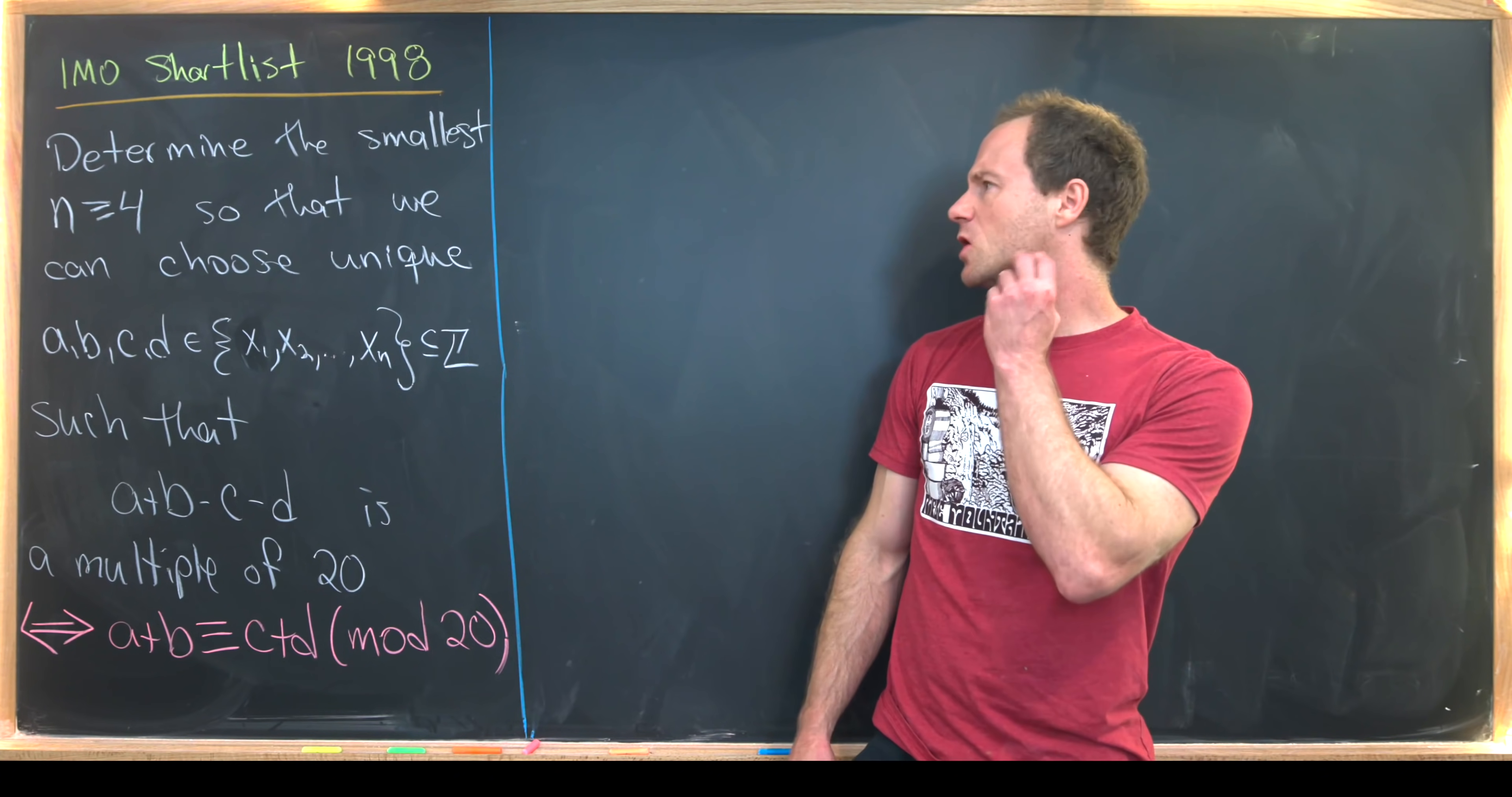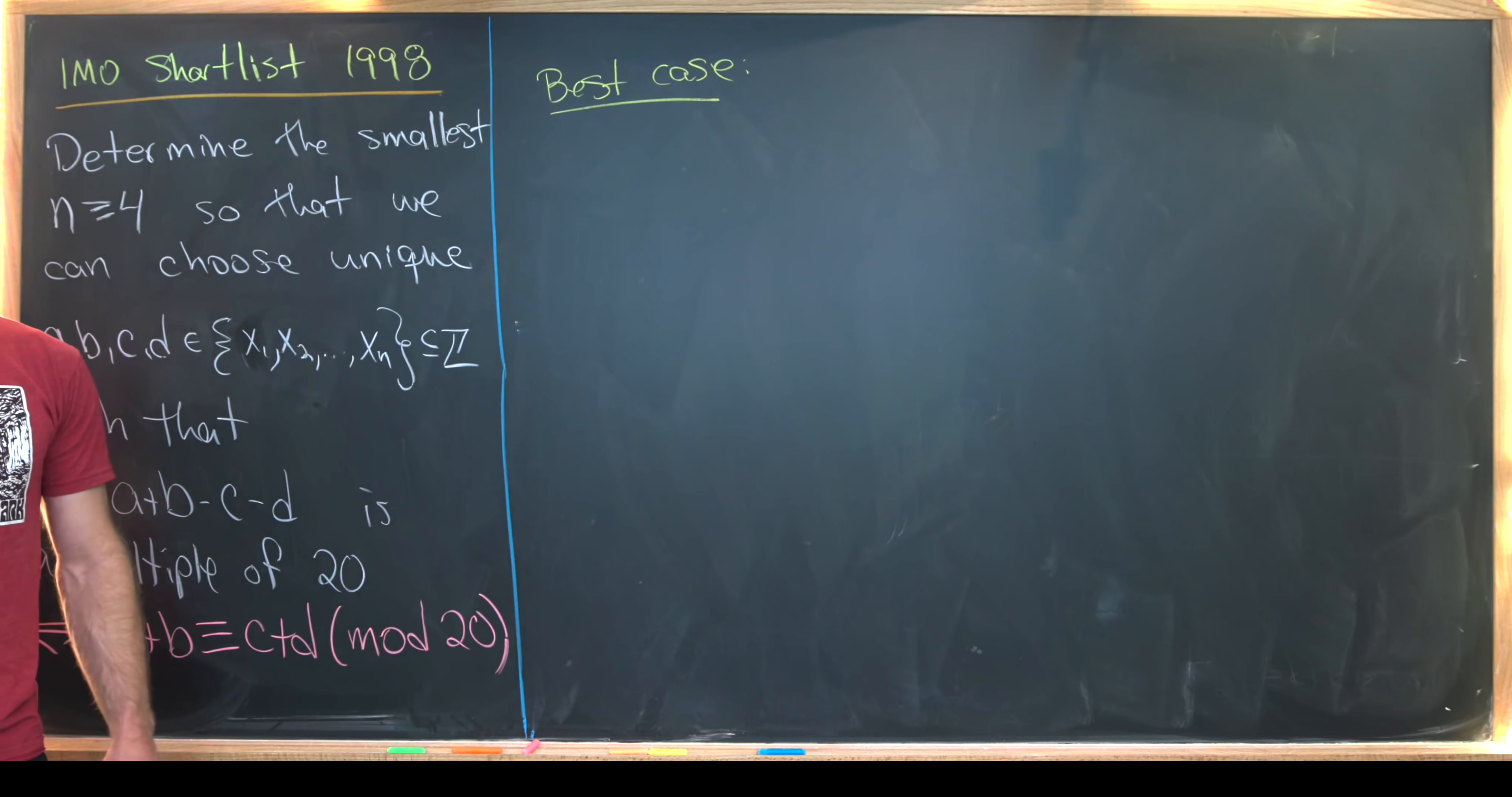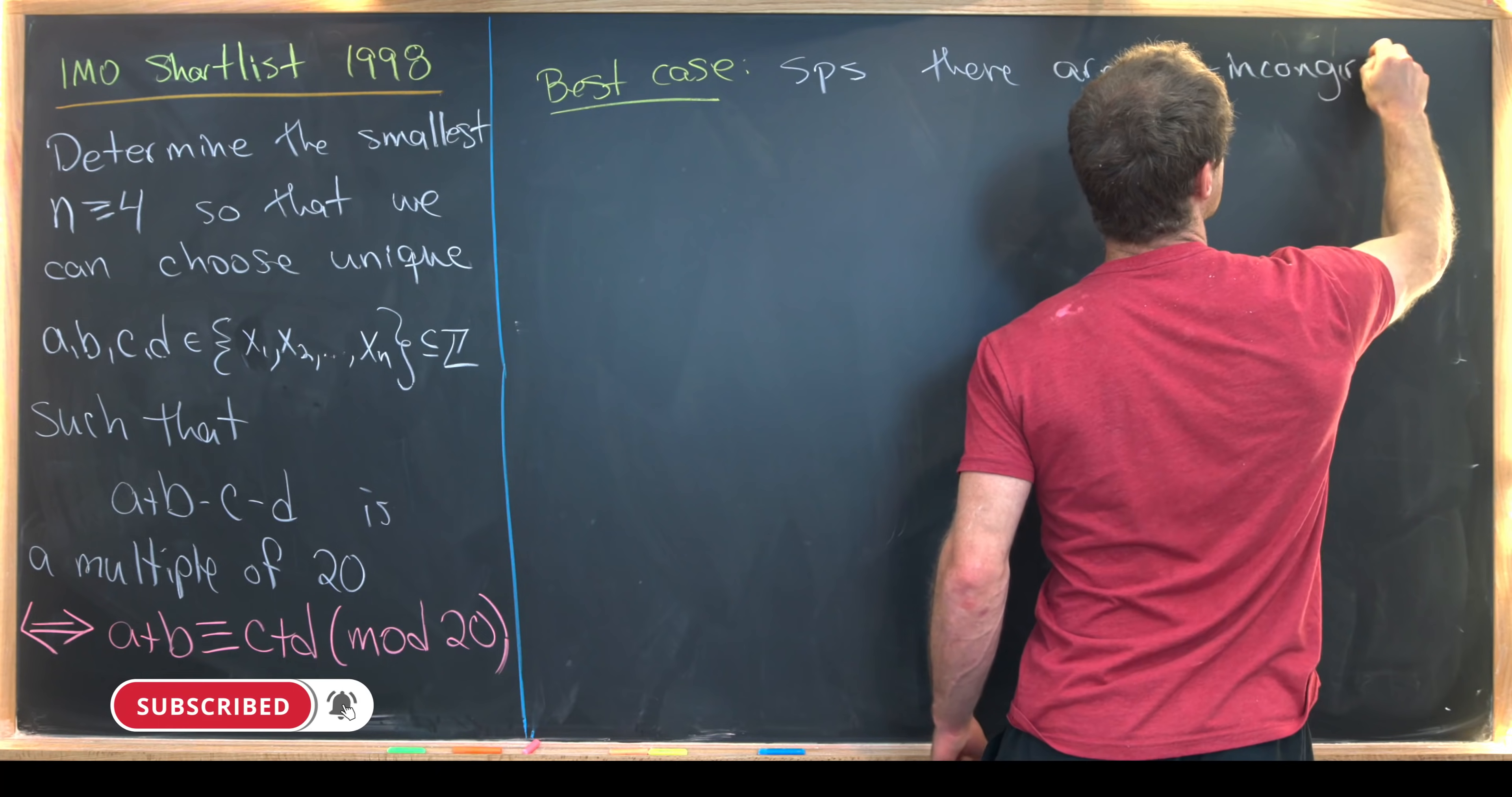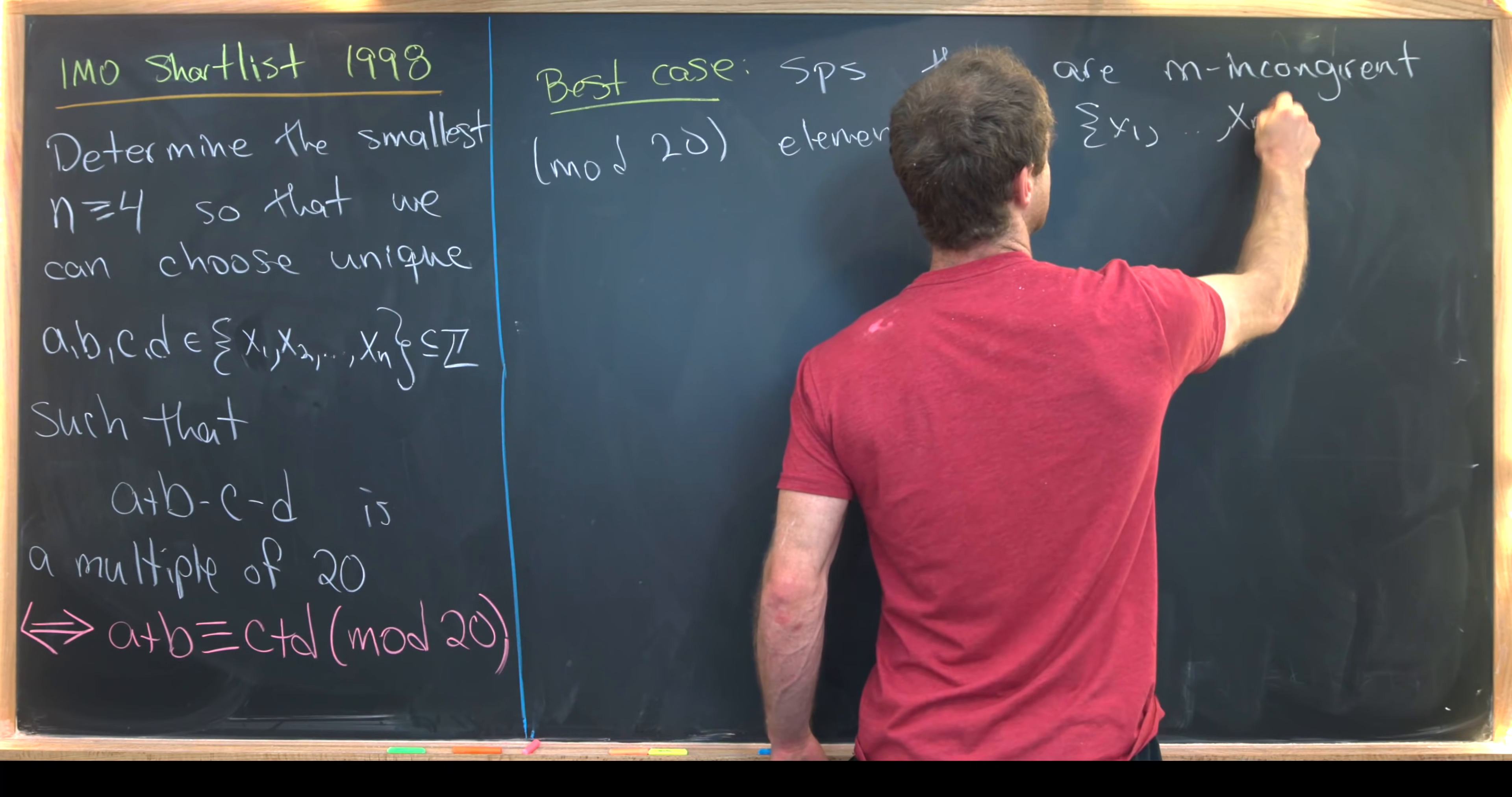Okay, so let's maybe look at the best case scenario first. And well, what would the best case be? Well, I would say the best case scenario would be we have a large number of incongruent numbers in this set. So let's suppose there are m incongruent, and I guess I should say modulo 20, elements of our set x1 all the way up to xn.